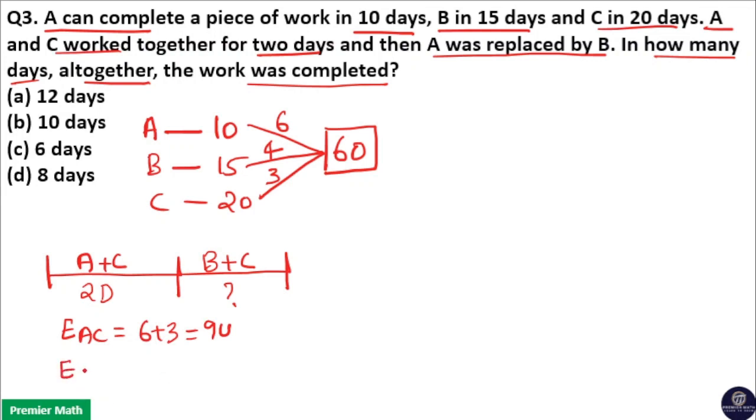And efficiency of B and C is 4 plus 3, 7 unit. Now A and C worked for 2 days. In one day A and C can complete 9 unit of work. In 2 day A and C can complete 18 unit of work.